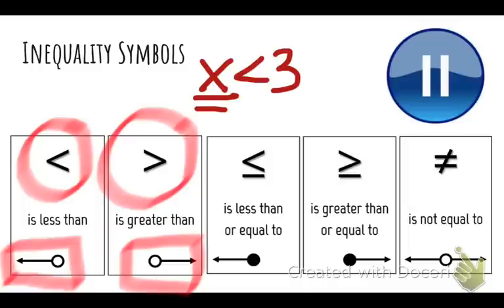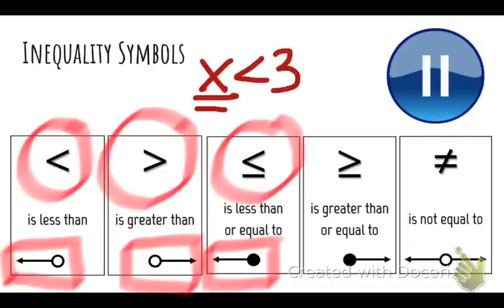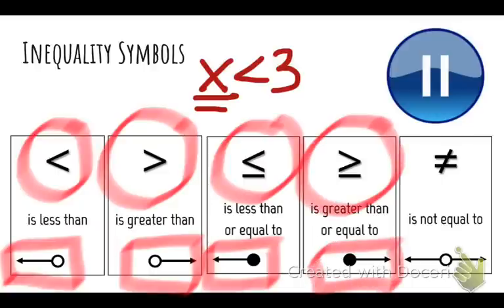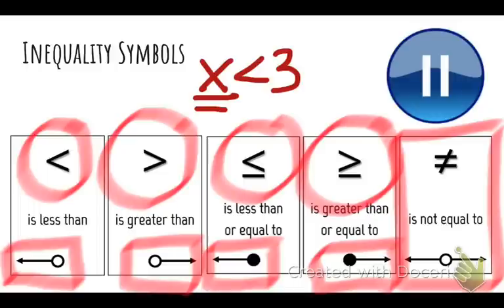The next two are similar to the first two. 'Less than or equal to' — when you graph it, you're going to need a closed circle. 'Greater than or equal to' — when you graph that one, you're also going to use a closed circle. The last inequality symbol is 'is not equal to,' which we probably won't use very much in this unit.